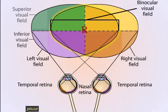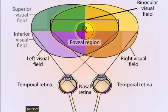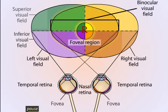The center of the visual field projects its image onto the foveal region of the retina. On the retina, the highly specialized fovea has a dense concentration of small diameter cones and a one-to-one relationship between the cones and the bipolar and ganglion cells. Visual acuity is therefore especially high in this region.